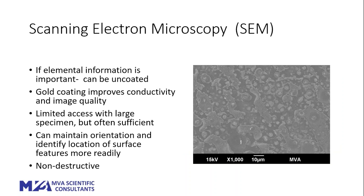With the scanning electron microscope, we have a low vacuum system in our lab so we are able to place the half vial inside the chamber. If elemental information is not required, we apply a gold coating — most of the samples shown here have been gold coated. Running the full area has some limitations because of the curved surface, but it does allow us to maintain orientation and identify exactly where we are in the vial. These techniques are also non-destructive.